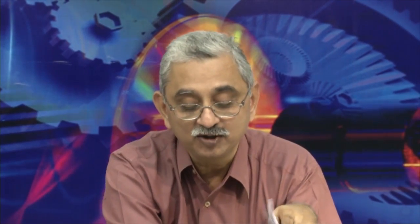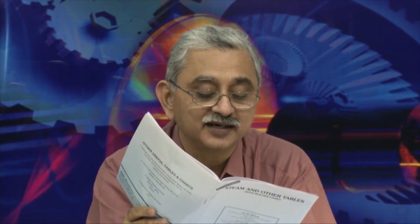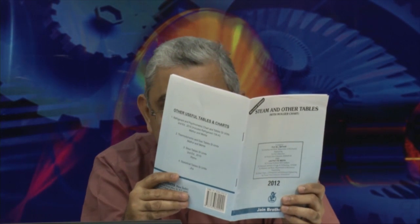The initial state is 2 bar dry saturated, so the temperature will be 120.2°C as dictated by steam tables. The final state is 8 bar. The pressure goes up by a factor of 4, so the volume decreases by a factor of 4. The initial volume is the specific volume at 2 bar dry saturated — 0.886 m³/kg — multiplied by 1.5 kg. The final volume is one-fourth of that.